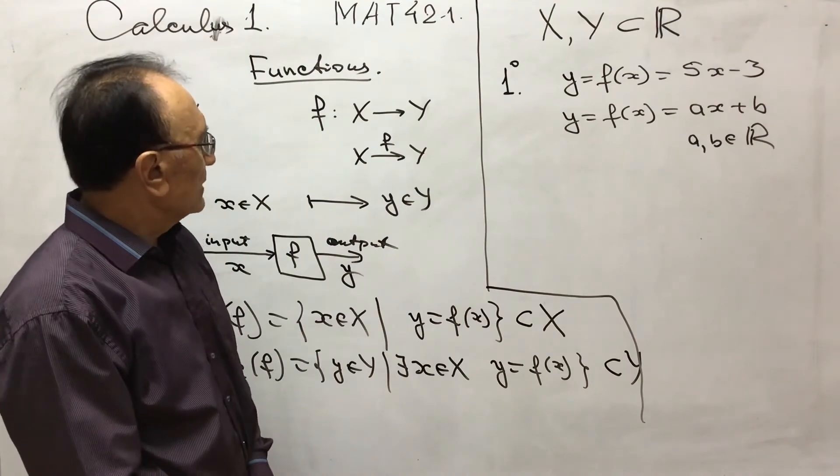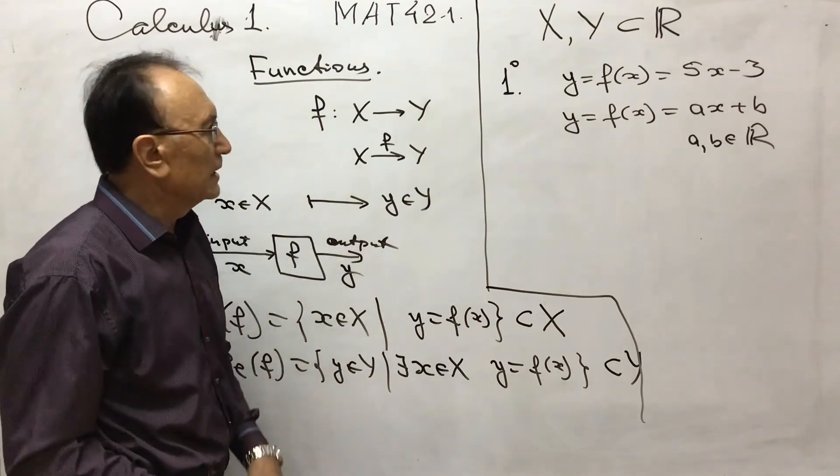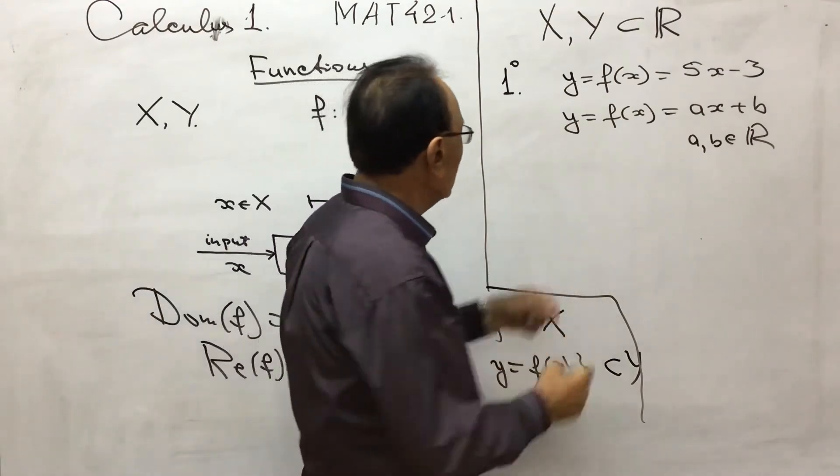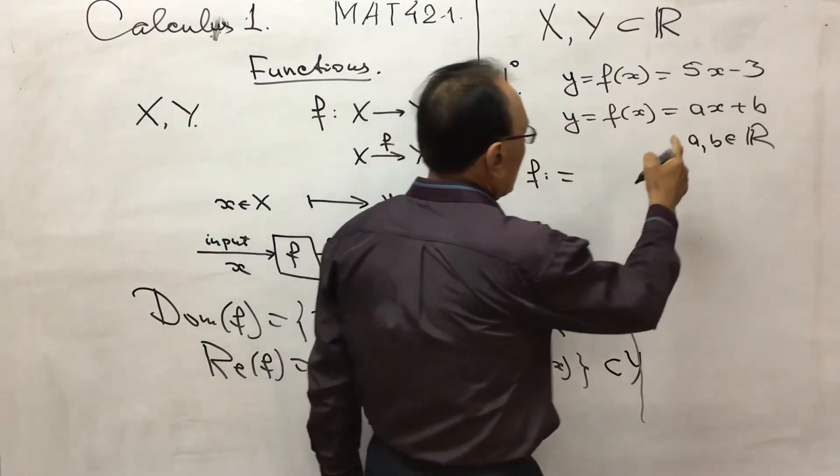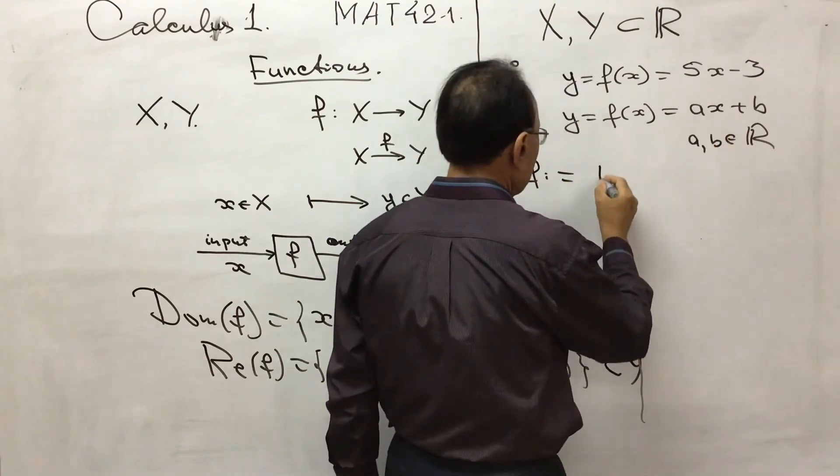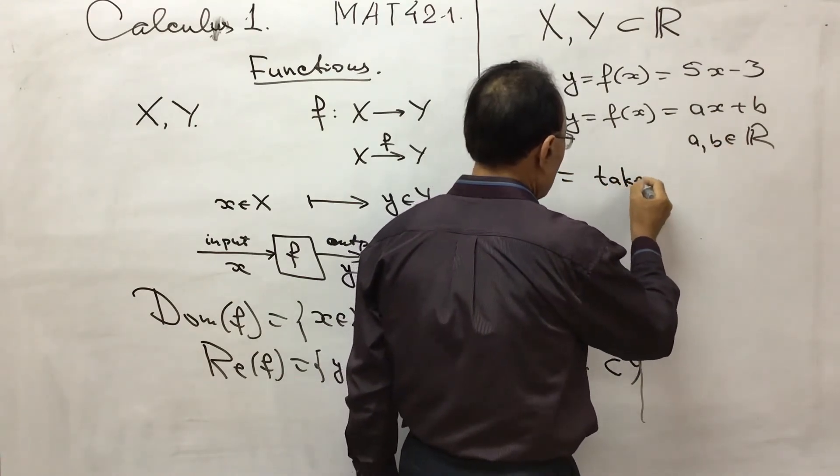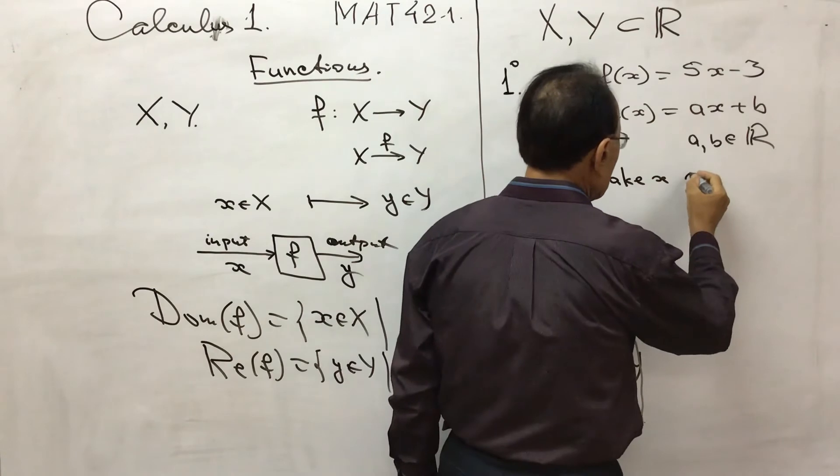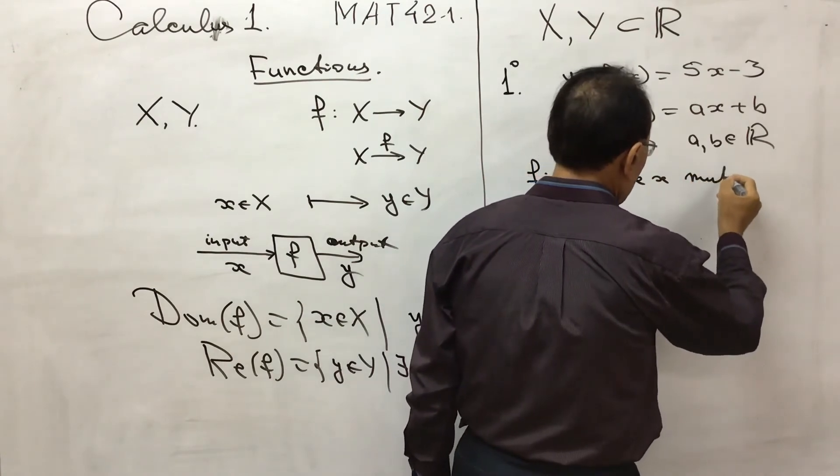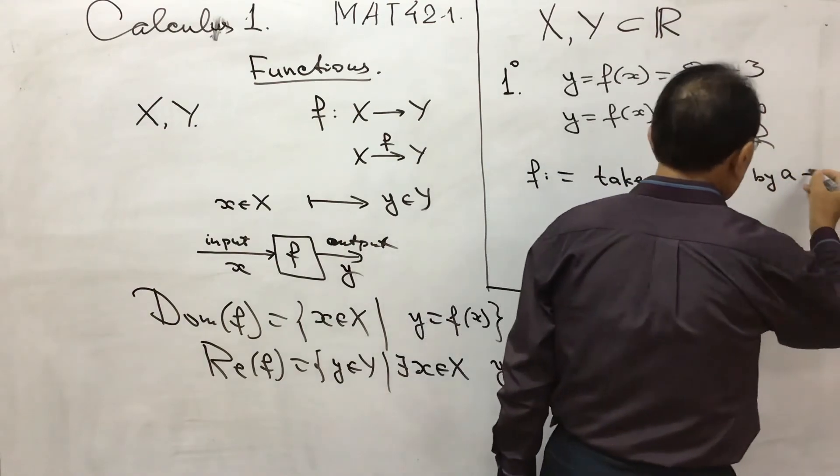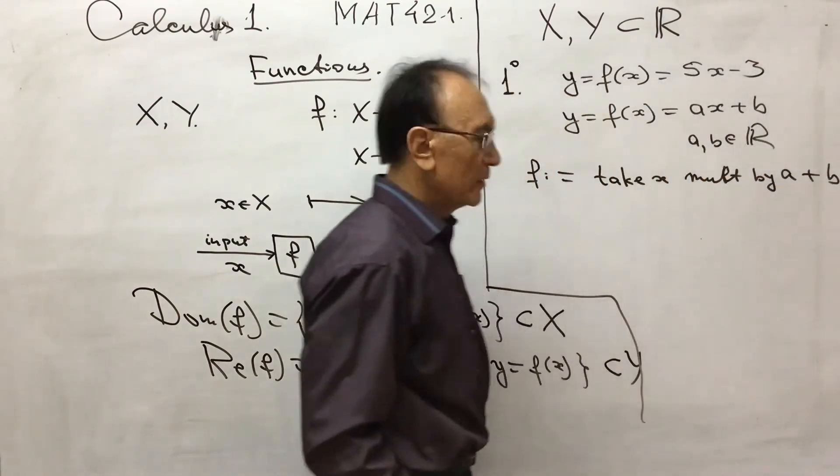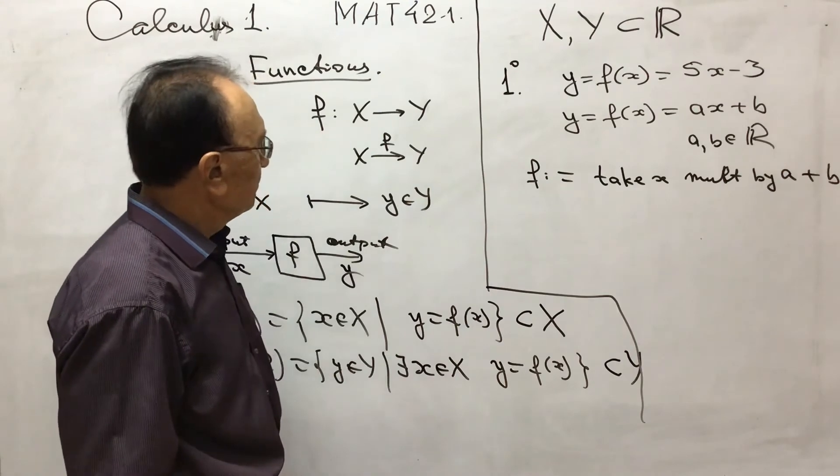What is this rule? In this case, the rule is, this rule, the rule f is taking x, take x, multiply it by a and add b. So this is rule f.